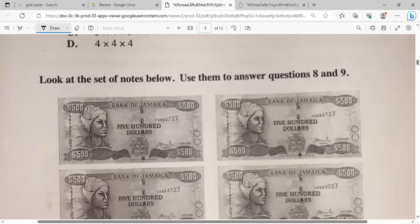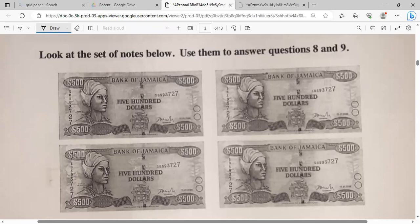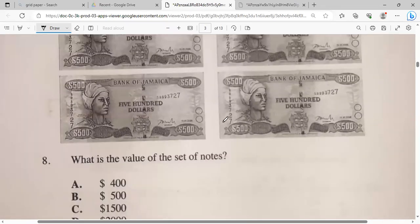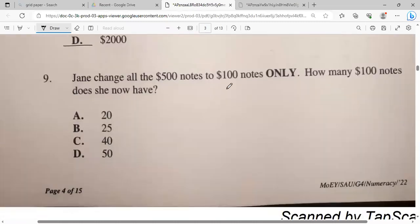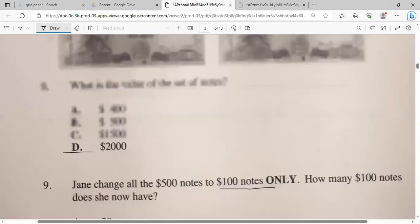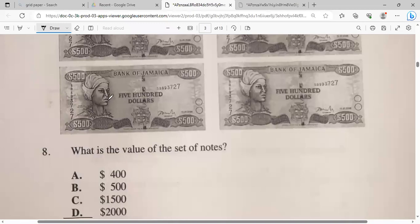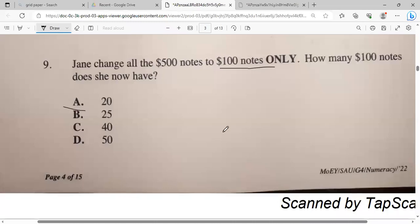Look at the set of notes below. Use it to answer question eight and nine. What is the value of the set of notes? So we have 500 plus 500, that's a thousand. One hundred under 500, that's one five and that 2,000. So that's $2,000. Jane changed all the 500 notes to 100 notes only. How many 100 notes does Jane have? One way you can look at it is that each $500 has how many $100? That would be five. Every one of them have five. So you can just add five plus five, that's 10, plus five is 15, plus five is 20.